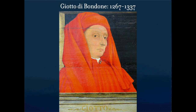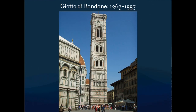Moving to Giotto — we have one of the only portraits of him. We think he worked with Cimabue, or was at the very least influenced by him. Giotto is really seen as the one who brings about the idea of realism — he's the transition point between Gothic, medieval, and the Renaissance. He was a polymath: what we would call today a Renaissance man, like Leonardo da Vinci. He was both an architect and a painter.